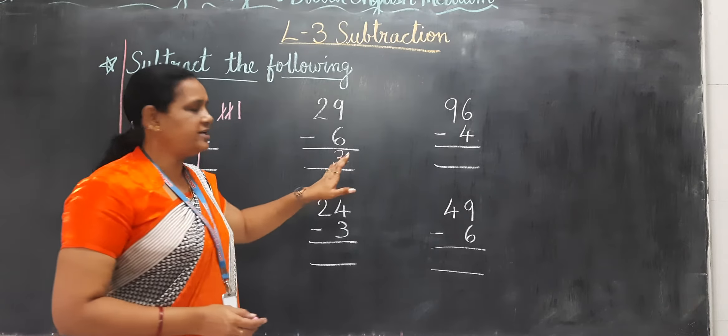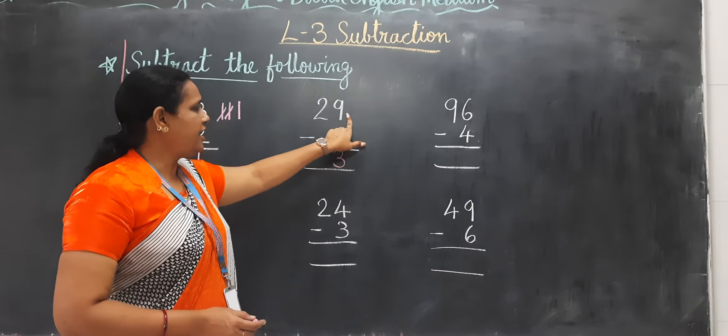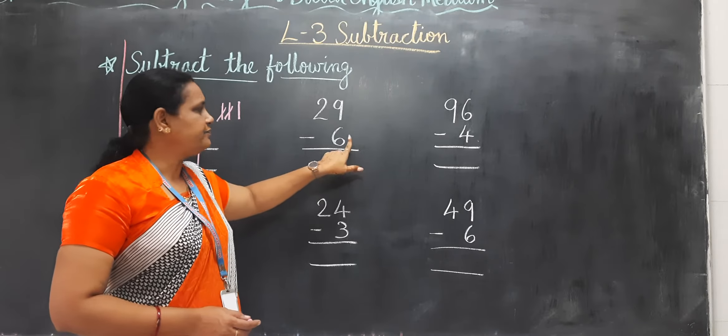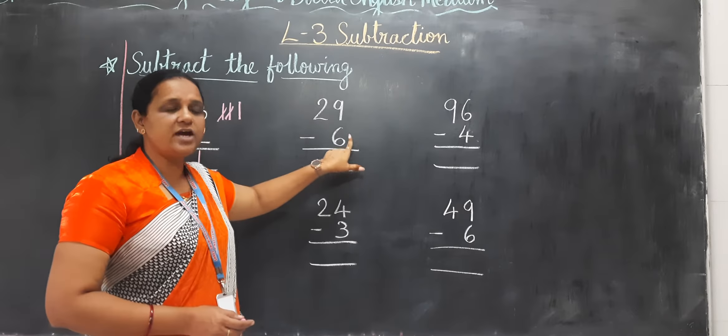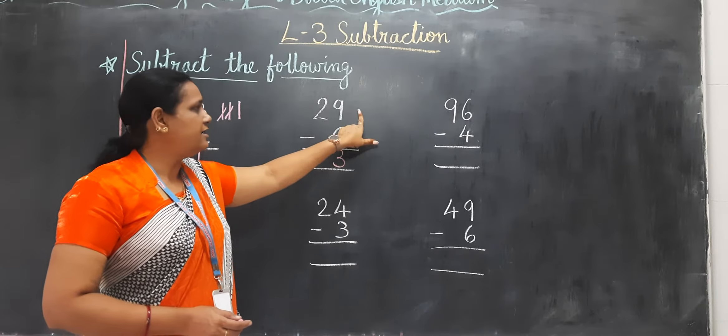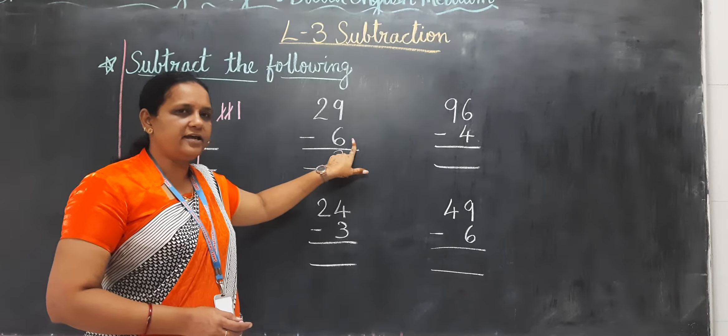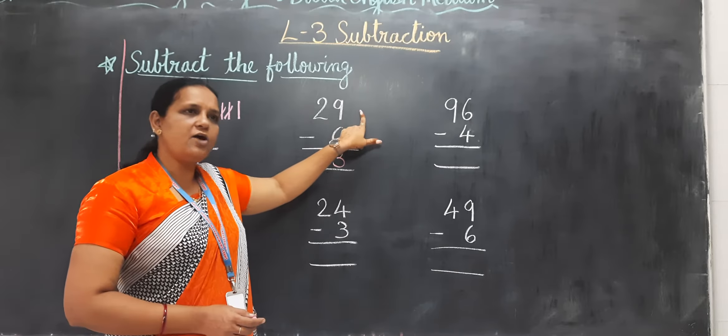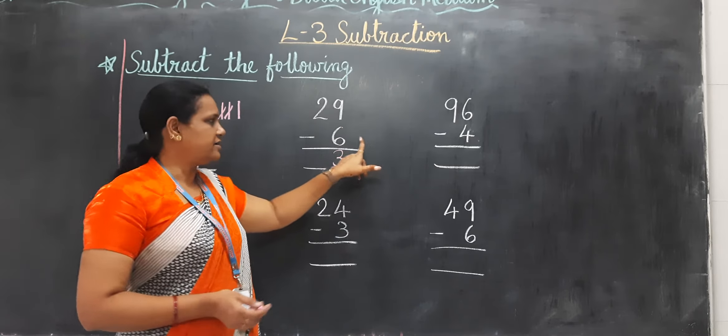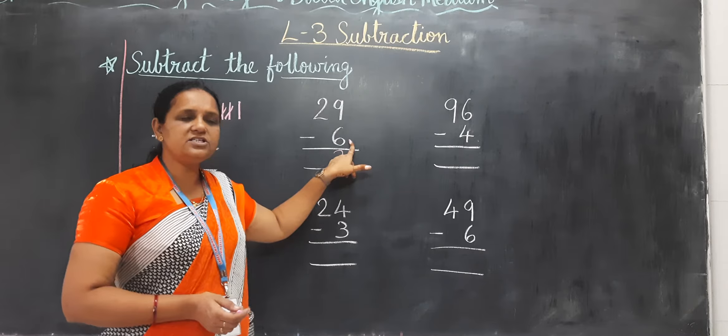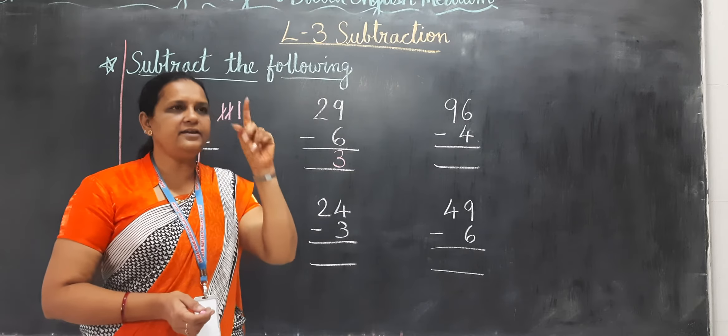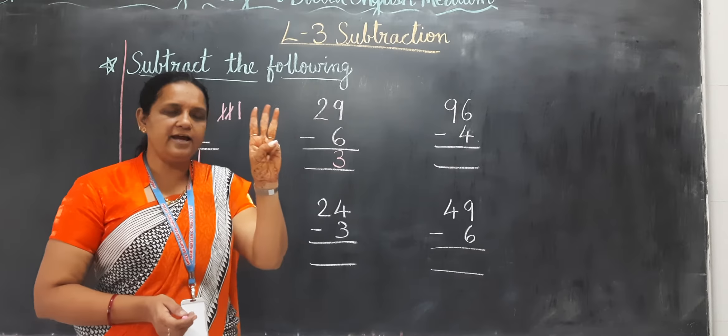The next one is from 9 you have to cut 6. So what you have to do? From 6, after 6 you have to count the number till 9. Now, how many fingers? 7,